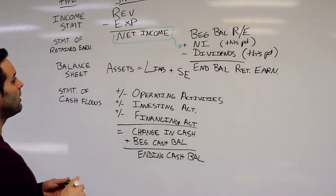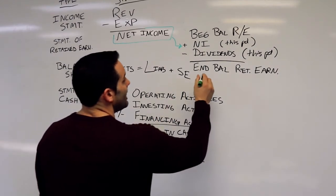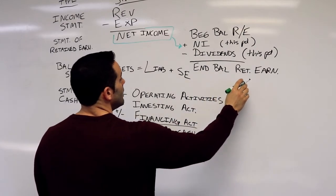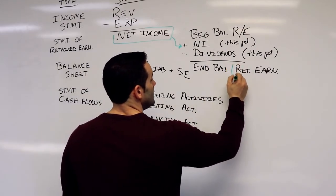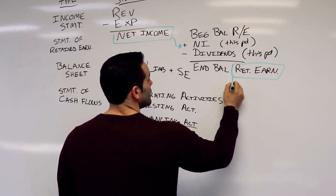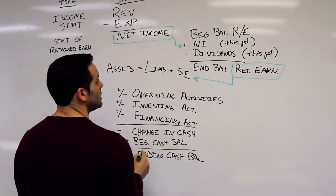Then we are going to have our ending balance of retained earnings. The statement of retained earnings pertains to the balance sheet because these same retained earnings are going to show up in the shareholder equity portion of our balance sheet.